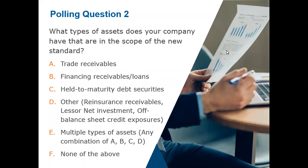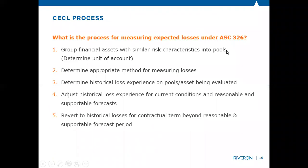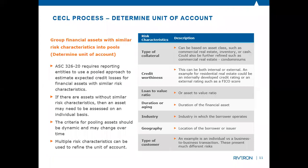We're going to dig into the five steps for how you measure under ASC 326. We'll jump right into the first: grouping financial assets based on similar characteristics — determining the unit of account. We touched on this a little bit. From a financial institution perspective versus an entity that just has trade receivables, what does this look like?